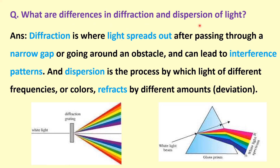What are the differences between diffraction and dispersion of light? Diffraction is where light spreads out after passing through a narrow gap, a grating, or around an obstacle, and can lead to an interference pattern — white light through a diffraction grating produces a diffraction spectrum. Dispersion is the process by which light of different frequencies or colors deviates by different amounts or angles when white light passes through a glass prism. Diffraction comes from very narrow openings or corners, whereas dispersion arises from the wavelength-dependent refractive index of the medium.